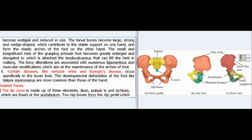The tarsal bones contribute to stable support and form the elastic arches of the foot. The small and insignificant heel of the grasping primate foot becomes greatly enlarged and elongated, to which is attached the tendo calcaneus that can lift the heel in walking. The bony alterations are associated with numerous ligamentous and muscular modifications which aim at the maintenance of the arches of the foot. Sixth, certain diseases like varicose veins and Buerger's disease occur specifically in the lower limb. The developmental deformities of the foot like talipes equinovarus are more common than those of the hand.